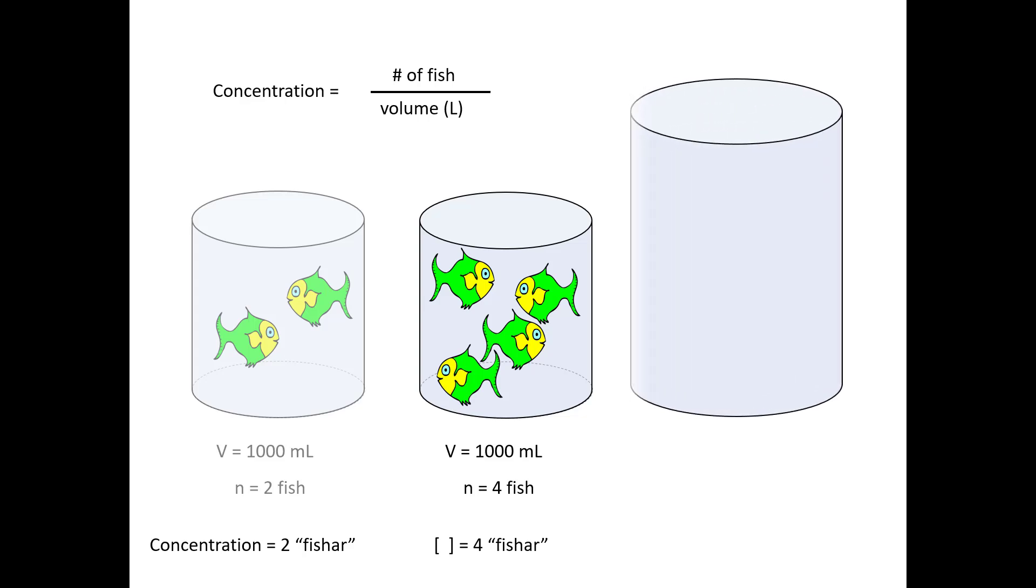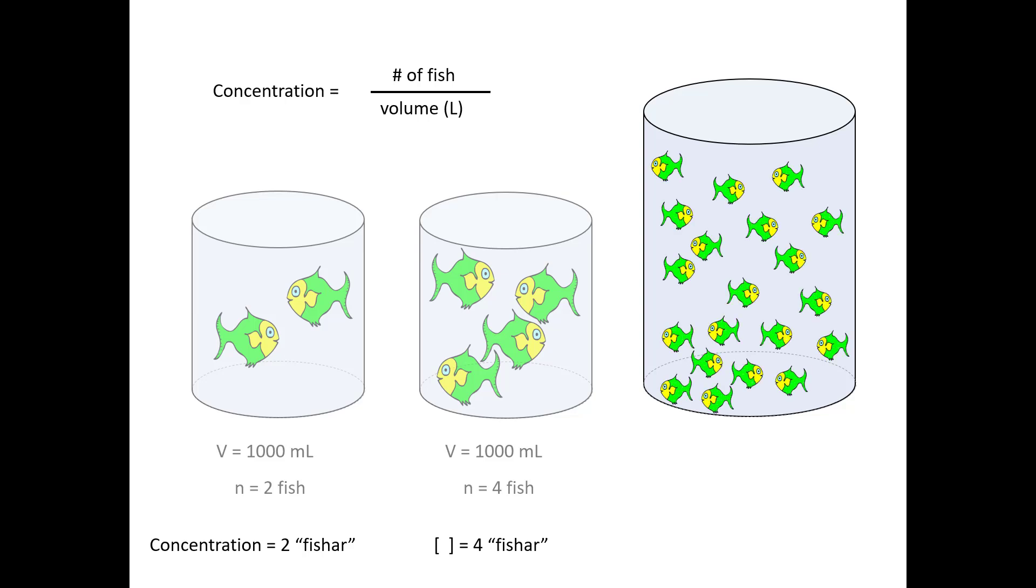Now I'm going to take this up a little bit bigger and I'm going to get an even larger tank. This tank is 5,000 milliliters, and no I'm not going to make you count all the fish. I've got 20 fish in my tank. So if I have 5,000 milliliters, that is equivalent to five liters. So it would be 20 divided by five and that would give us a concentration of four fishars.